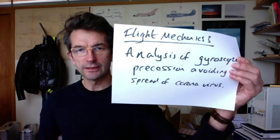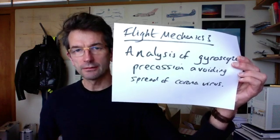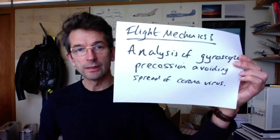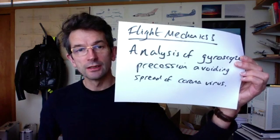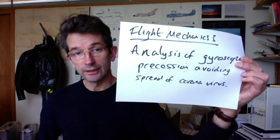Hello folks, Flight Mechanics 3 and we're going to look at analysis of gyroscope precession. So here I have a quite nice gyroscope. It's not spinning at the moment, it's just hanging like a weight and you can see if I move it, it just hangs like a weight as you'd expect it to hang.